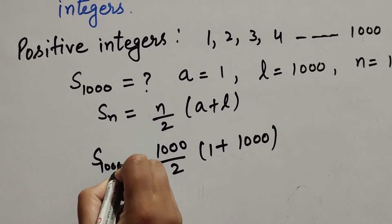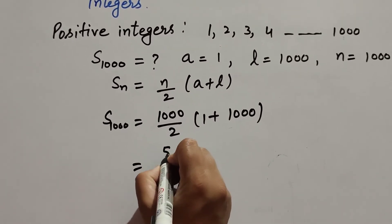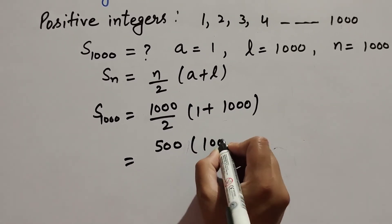We find the sum of thousand terms. Thousand divided by 2, it is equal to 500. One plus thousand, it is equal to 1001.